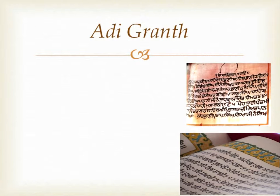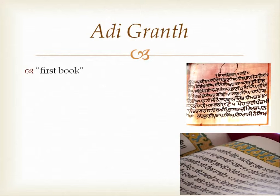The main text in Sikhism is the Adi Granth. It is 1430 pages long — you don't need to know that number, it's not going to come up on an exam, but it gives you an idea of the size of it. The term itself means 'first book,' with 'first' meaning prominence. It is also referred to as Guru Granth Sahib, which means the revered book that is the Guru.